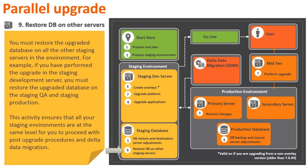In Stage 9, restore the upgraded database on all the other staging servers in the environment. For example, if you have performed the upgrade in the staging development server, you must restore the upgraded database on the staging QA and staging production. This activity ensures that all your staging environments are at the same level for you to proceed with post-upgrade procedures and delta data migration.